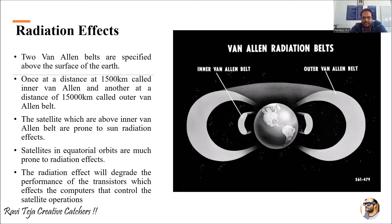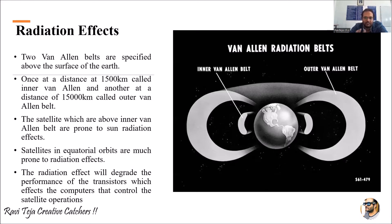So, at what distance does the satellite get affected by radiation? Let us assume there is a globe, and this globe is surrounded by several orbits, and these orbits have many satellites which keep on revolving around the earth for communication purposes. Now, there are two types of belts — here comes the concept called Van Allen radiation belts. There are two types: the inner Van Allen belt and the outer Van Allen belt. These are two layers or belts formed around the earth which keep on affecting the satellites moving in orbital space.